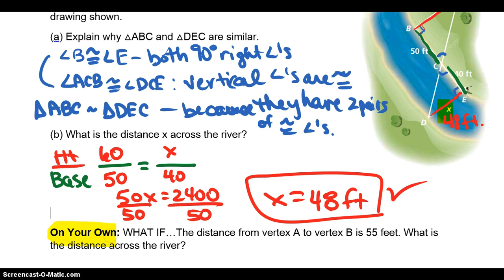Your job then is to do on your own, looking at the vertex A to B is 55 feet. Use the same picture that's given, and then find the distance across the river if that changes to 55. Okay, have a great night. We'll see you tomorrow.